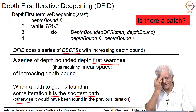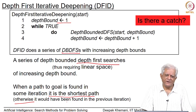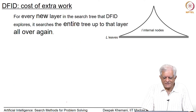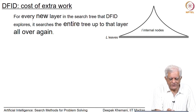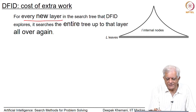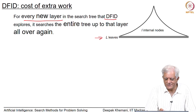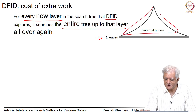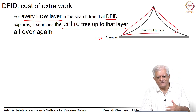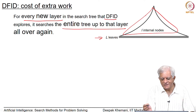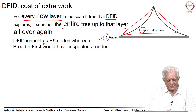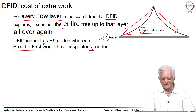But is there a catch? Are we getting something for free — getting the advantages of both breadth first search and depth first search? Obviously it does extra work: for every new layer that DFID explores, it searches the entire tree up to that layer all over again. So it is in some sense doing breadth first search, but re-examining all the internal nodes as well. If there are I internal nodes and L leaves, then DFID inspects L plus I nodes, whereas breadth first search would have inspected only L nodes. So how much is this extra work?